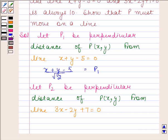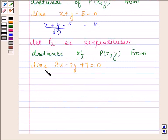Now let P₂ be the perpendicular distance of point P(x,y) from the line 3x-2y+7=0. This is (3x-2y+7)/√13 = P₂.